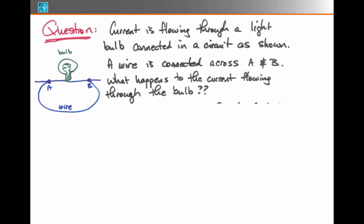Let us consider the following thought question. Imagine we have current flowing through a circuit in which a light bulb is connected. Imagine as well that we have a wire that we suddenly connect across the points A and B. What happens to the current flowing through the bulb?